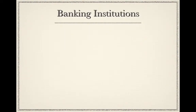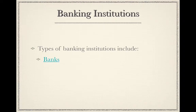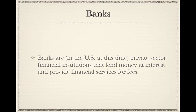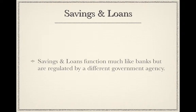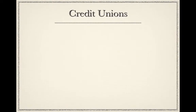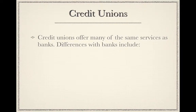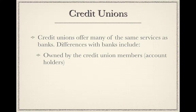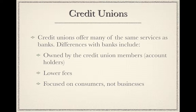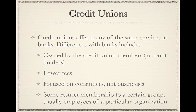Types of banking institutions include banks, savings and loans, and credit unions. Banks are private sector financial institutions that lend money at interest and provide financial services for fees. Some countries have public banks owned by the government, but in the United States we don't run our economy that way. Savings and loans function much like banks but are regulated by a different government agency. Credit unions offer many of the same services as banks but are owned by the credit union members — the account holders — often charge lower fees, and are focused on consumers rather than businesses. Some restrict membership to a certain group, usually employees of a particular organization.